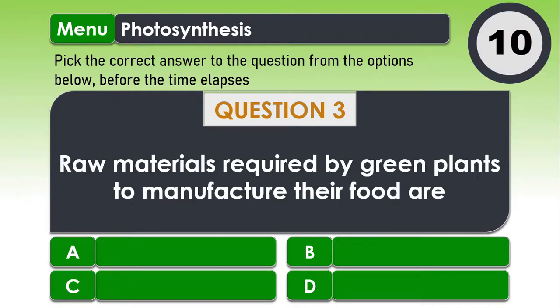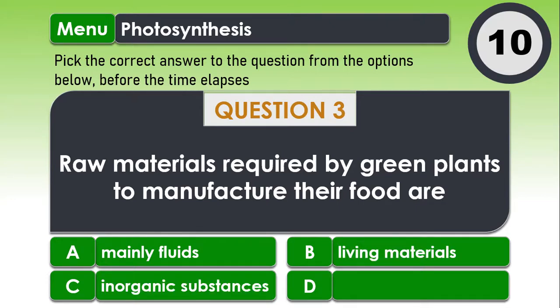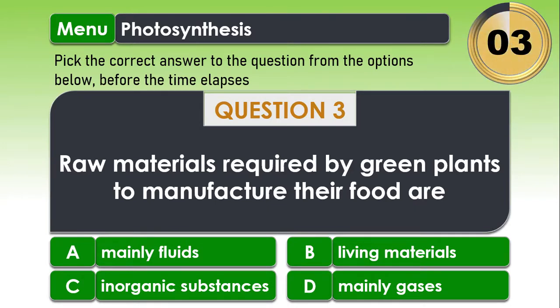Question 3. Raw materials required by green plants to manufacture their food are: mainly fluids, living materials, inorganic substances, and mainly gases. The correct answer is C. Inorganic substances.